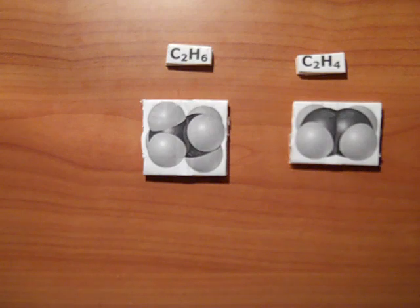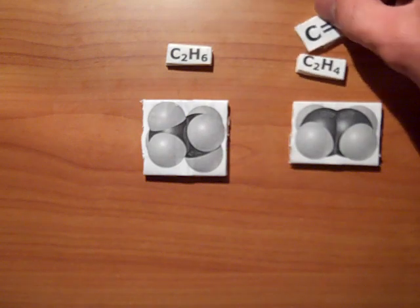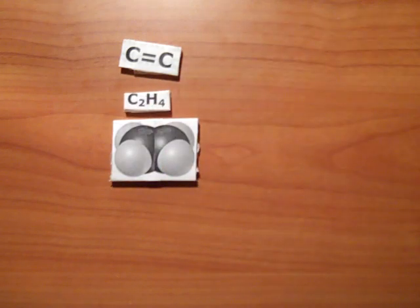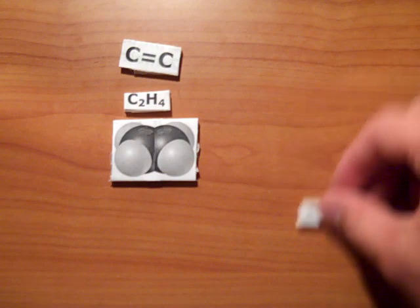Alkenes contain at least one CC double bond, given by this example here, and they all end with the suffix -ene, E-N-E.